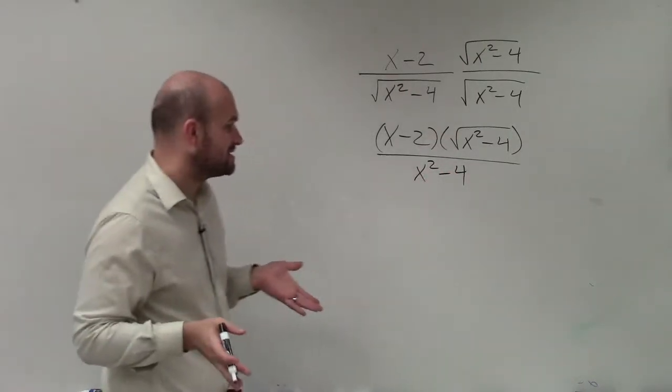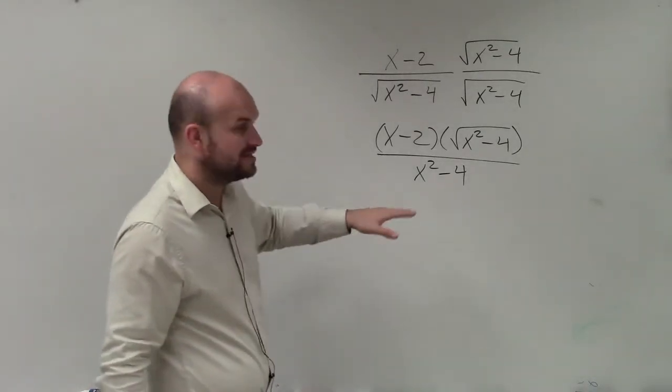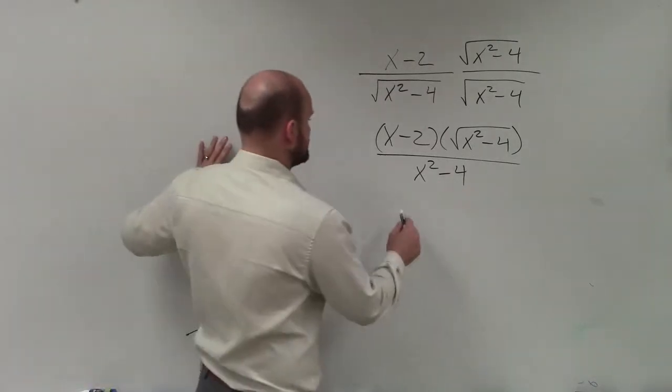Now what's important about this problem is we wanted to see how else can we simplify this, right? Well, this x squared minus 4 can be simplified using the difference of two squares.